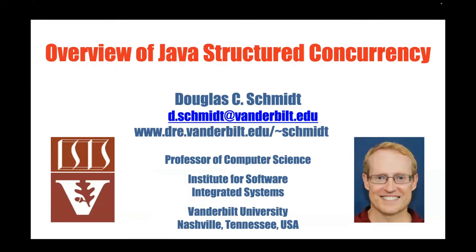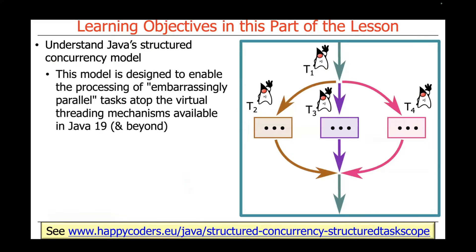I'm going to start today by giving an overview of Java's structured concurrency mechanism. This is a new concurrency model added to Java fairly recently, designed to enable the processing of embarrassingly parallel tasks atop the virtual threading mechanisms added to Java 19 and beyond. We covered virtual threading in previous videos, so what I'll discuss now leverages virtual threads and extends and enhances them in new, interesting ways.